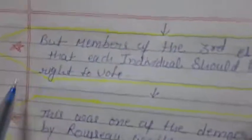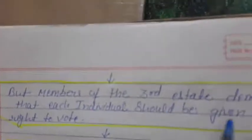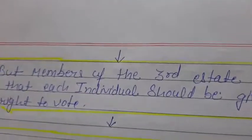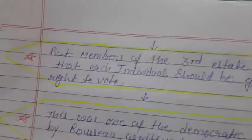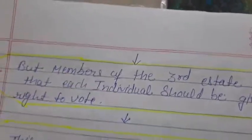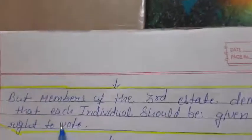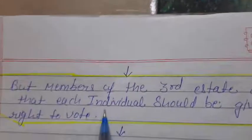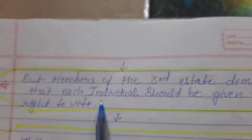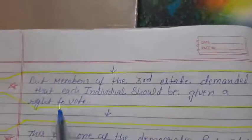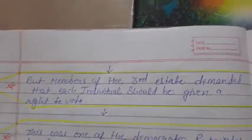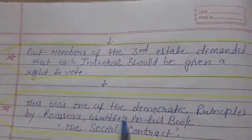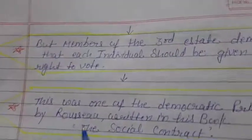But the members of the Third Estate demanded that each individual should be given the right to vote. The people of the Third Estate wanted that every individual member should have one vote. They made this demand before Louis XVI - that every member should have one vote, every individual has their own value, and every individual must have their own vote. This was one of the democratic principles of Rousseau.